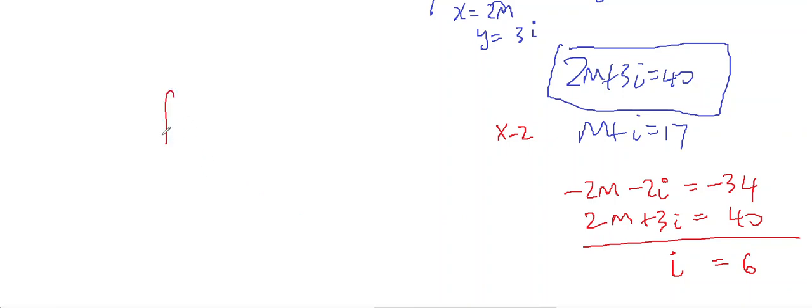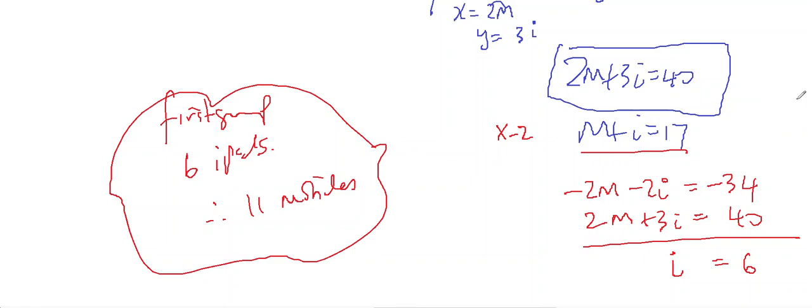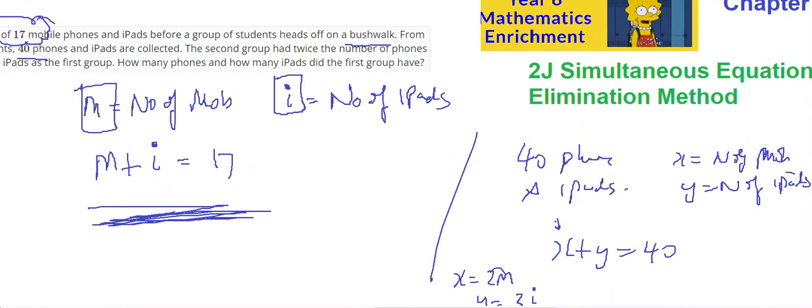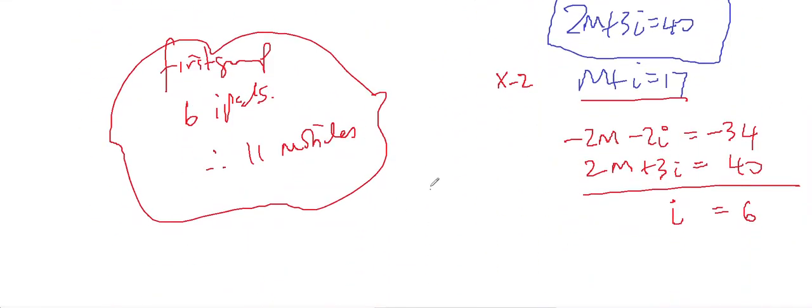Therefore, there were, in the first group, 6 iPads. And I know that there were 17 in total, therefore 11 mobiles. And, in the first group. So, that's the answer to the first question.